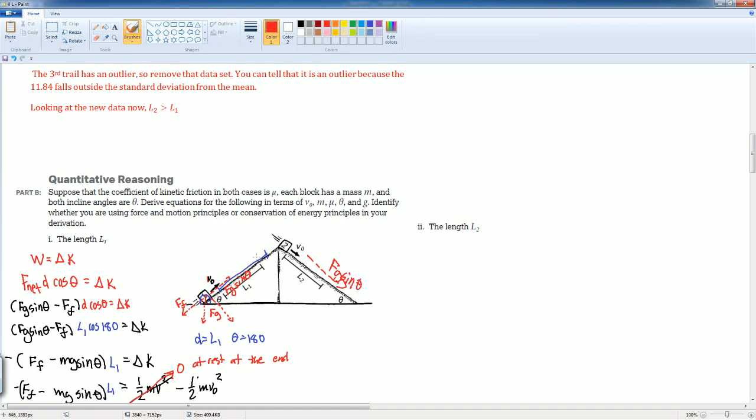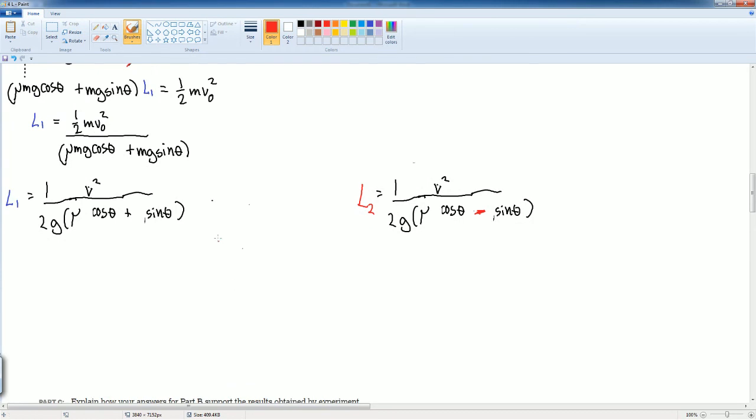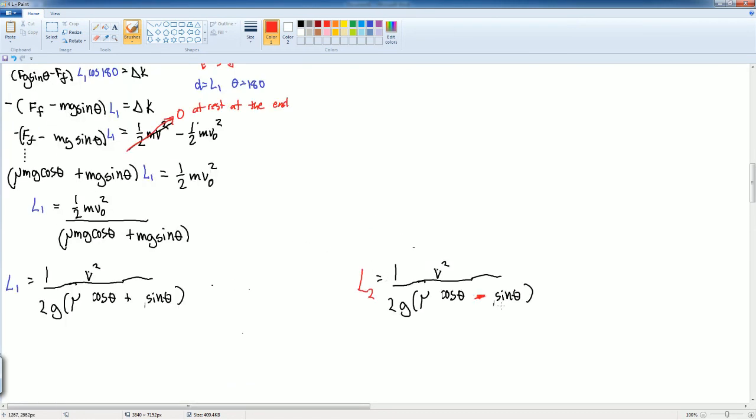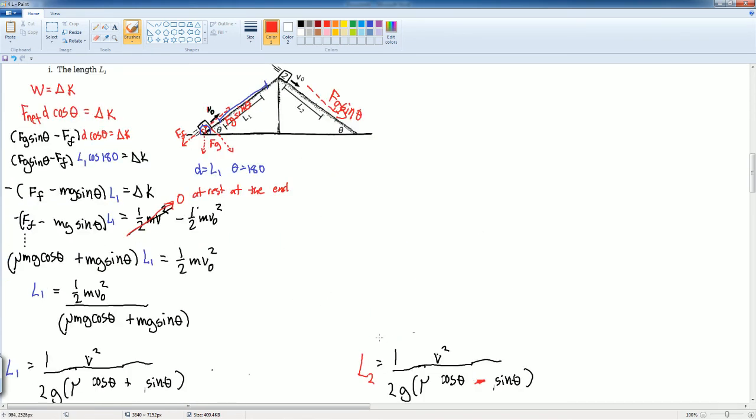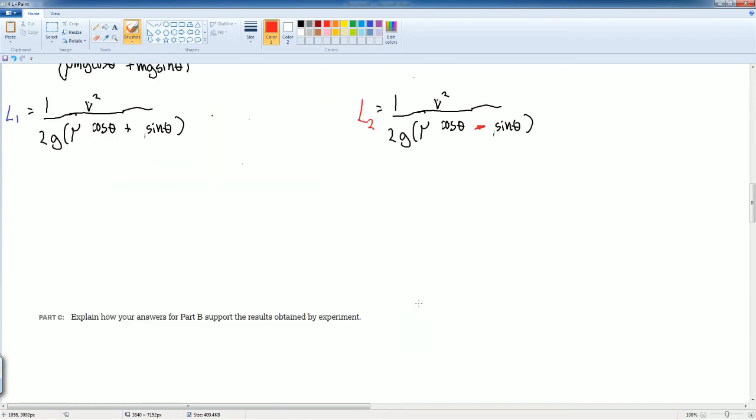So this is now the F_G sine theta term. All right, so if we're going to take going up, for this value should be positive, this has to be negative. Or if you do the other way, all right, one has to be positive, the other one has to be negative. So there you go. Rather than go through the whole process again, I can just look at this equation and see that it goes down, so the only thing that changes is the sign in front of the sine theta. All right, now we want to say explain how your answer for part B supports your result that you got.